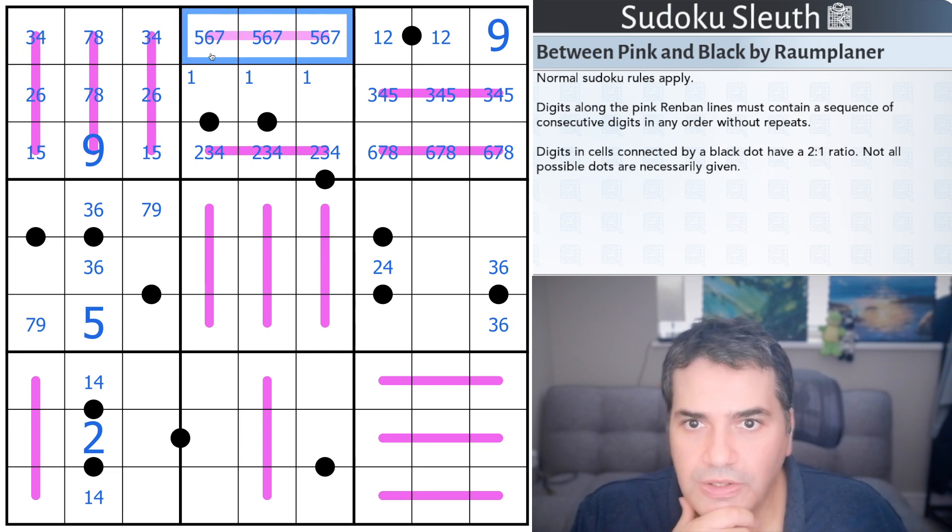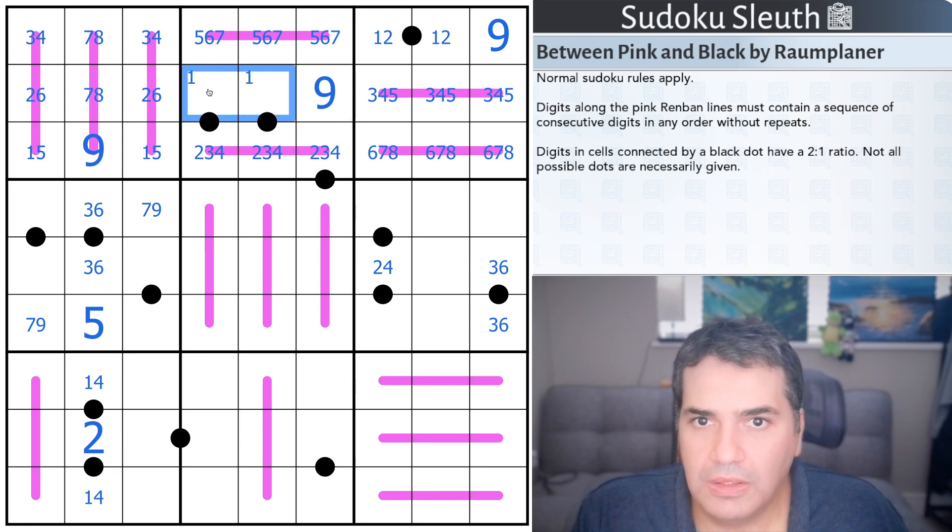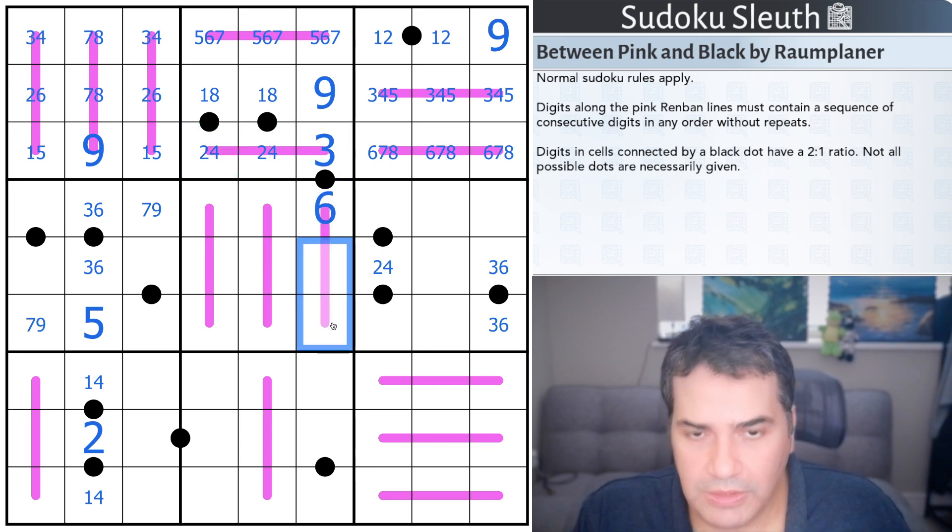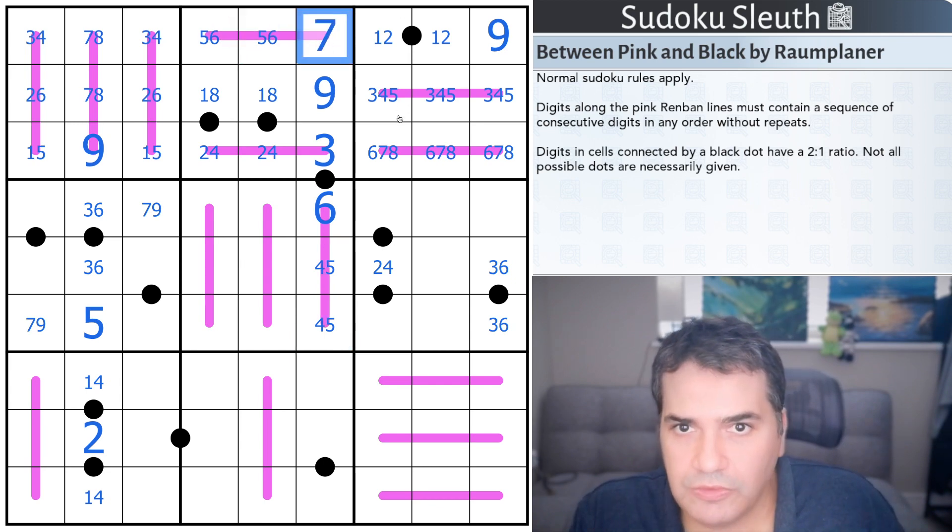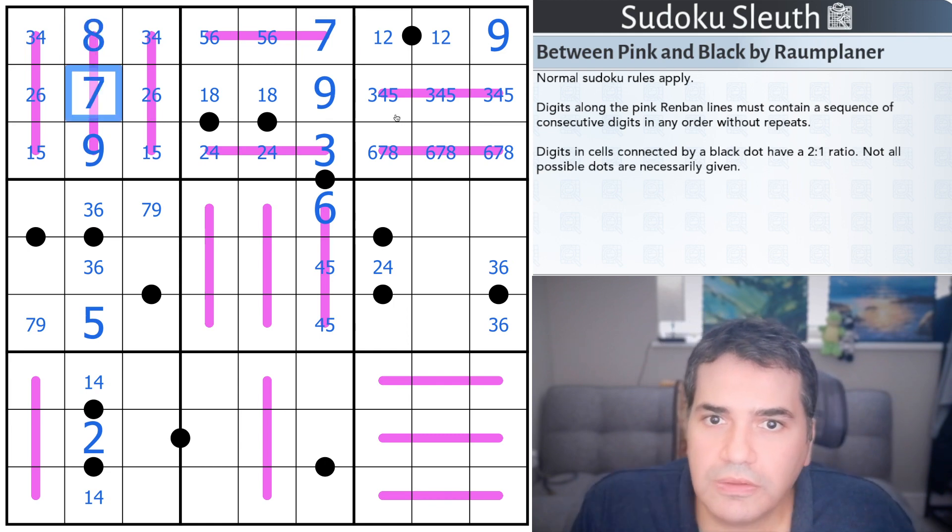So the 3 has to be on the renban, which means that the 4 is also there. It's 3, 4, 5, since the 2 is definitely gone. So 1 and 2, it means that the 2 is in one of these two cells. And then the 3 is in one of these two cells. Because essentially, it's 1, 2, 3, since the 2 is not allowed to be here. I expected more of a challenge, given the rating. But this 1, 2 tells me that this is not 1, 2, 4.